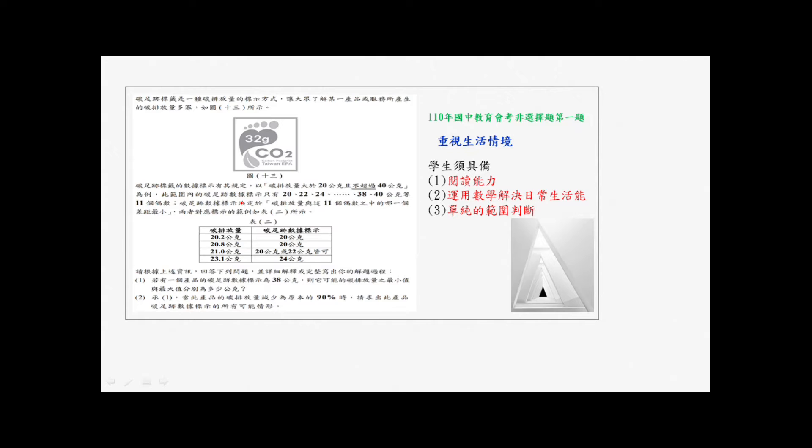以碳排放量大于20公克且不超过40公克为例,此范围内的碳足迹数据标示只有20、22、24、38、40公克等11个偶数。碳足迹标示的决定于碳排放量与这11个偶数之中的哪一个差距最小,两者对应标示的范例如下列表2所示。